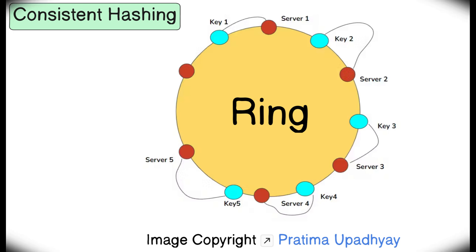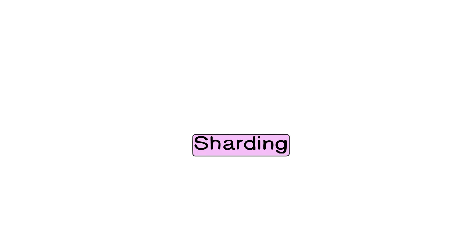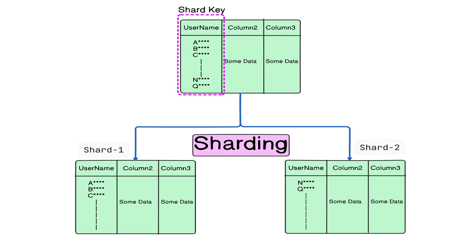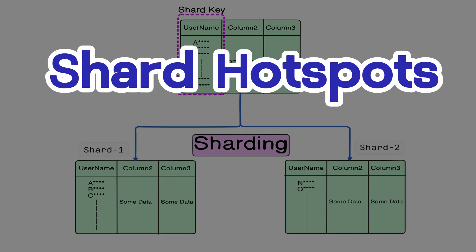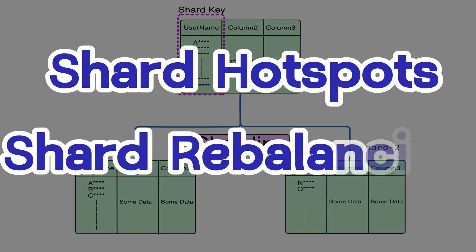Moving ahead, another approach is sharding. We divide the complete dataset into smaller shards or pieces, with each server storing a subset of data. For example, to store user profiles, we can store all users with names starting A to M on server 1 and N to Z on server 2. Or in a global e-commerce application like Amazon, user details can be split based on geographical location. We do not store complete data in a single cache server but divide it into multiple shards stored on different servers. Sharding is a complex concept — some shards may be accessed more frequently than others, creating shard hotspots, and uneven data growth may require shard rebalancing. We will cover sharding in a separate video.